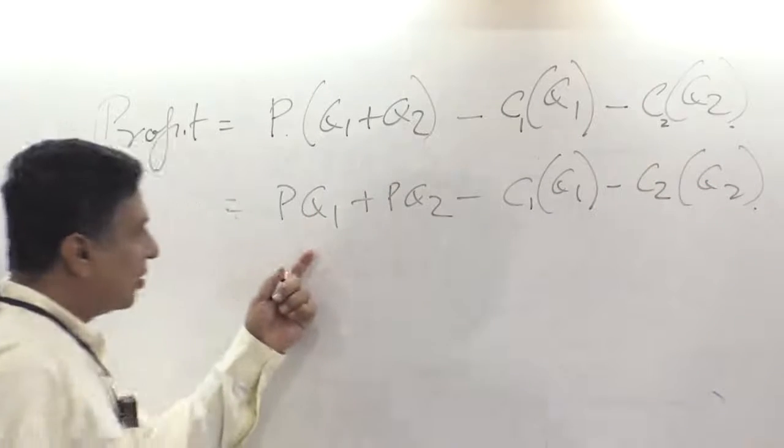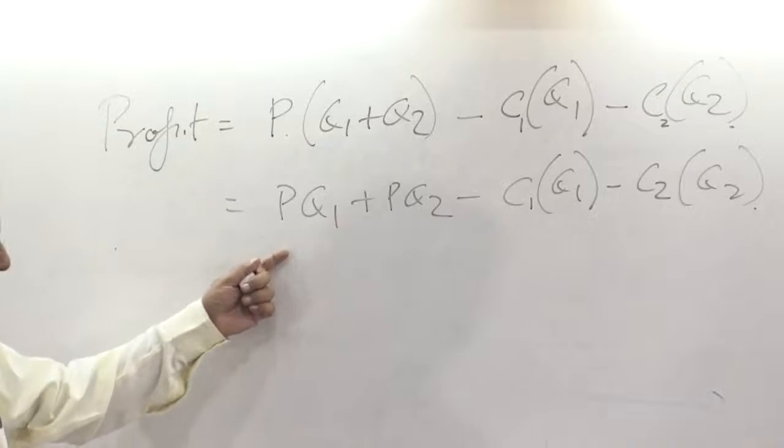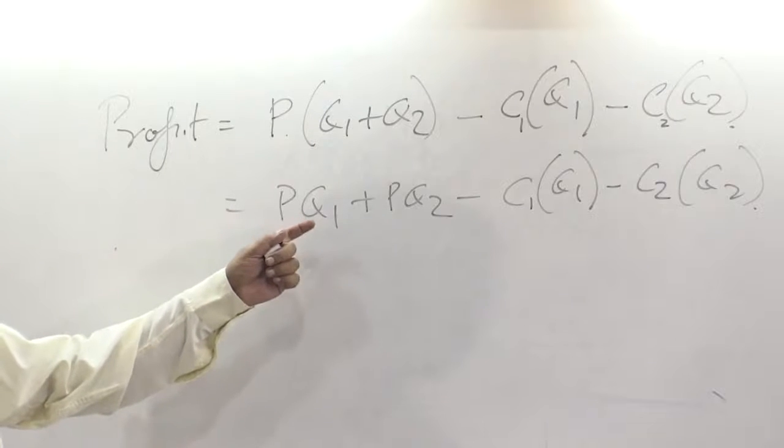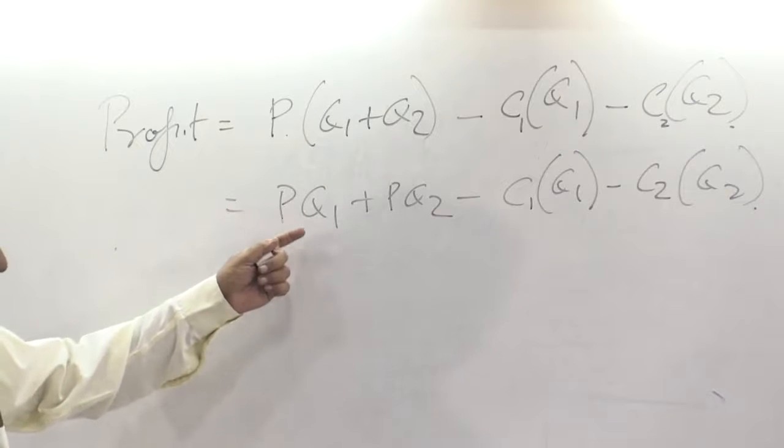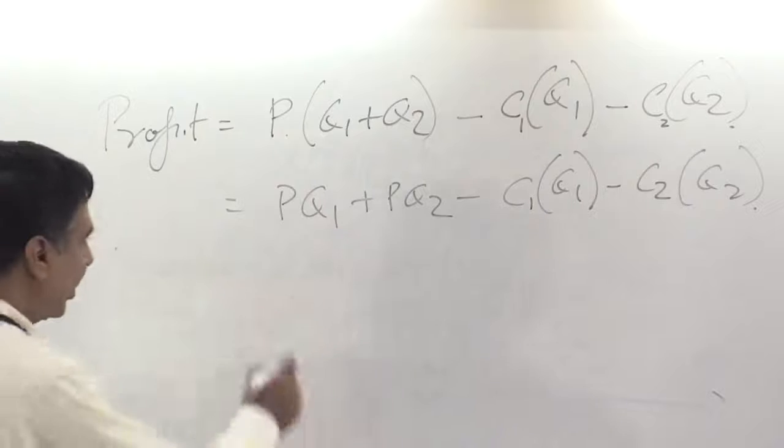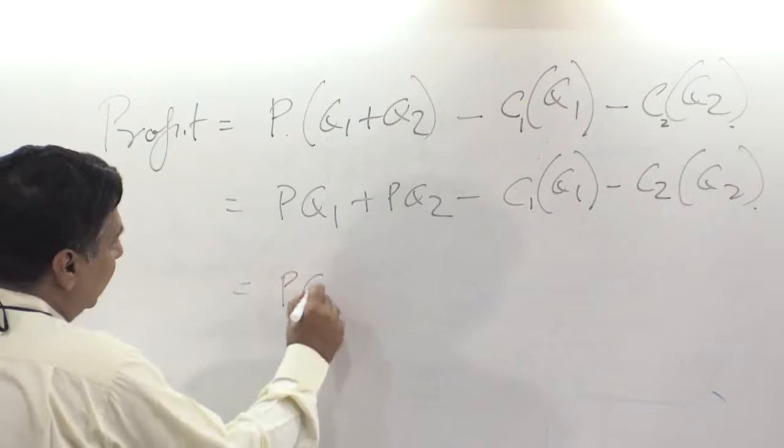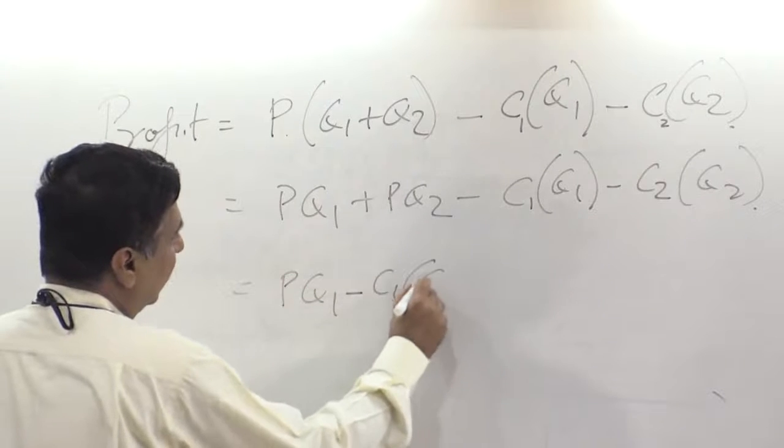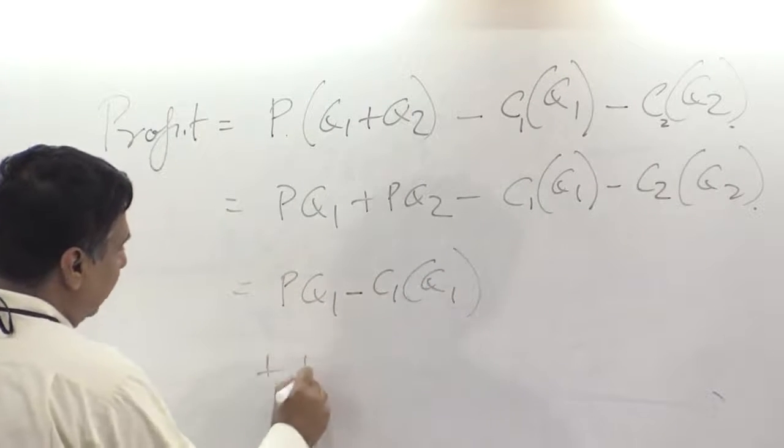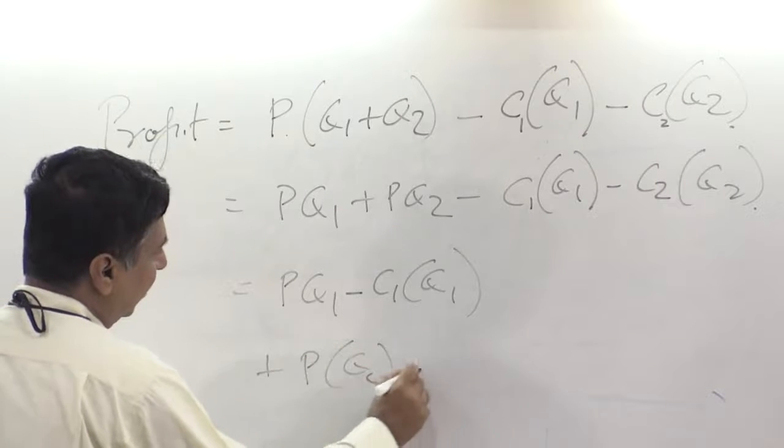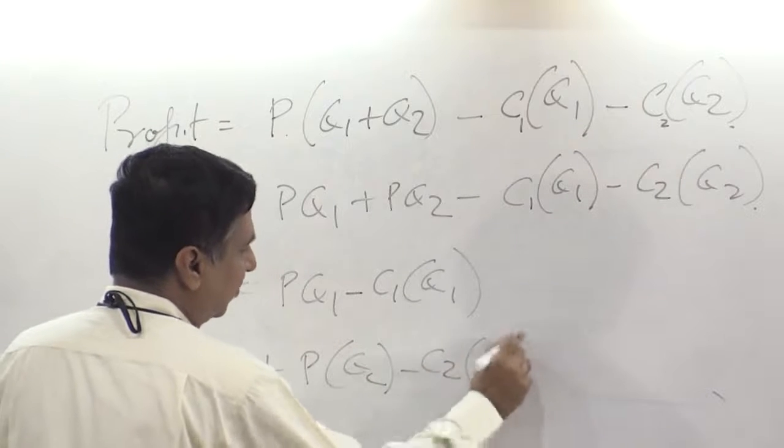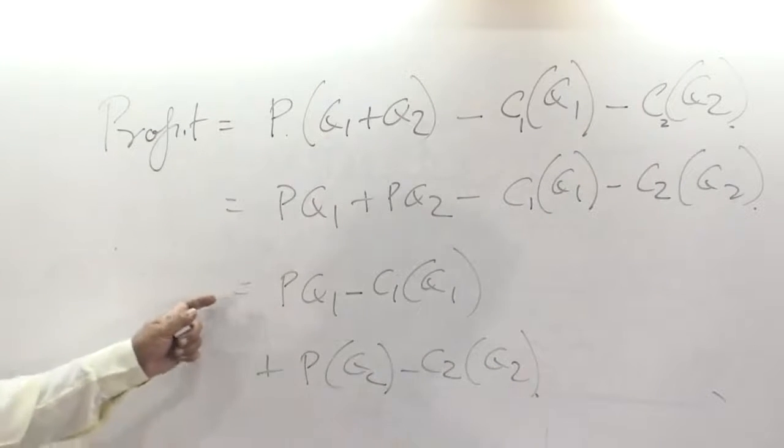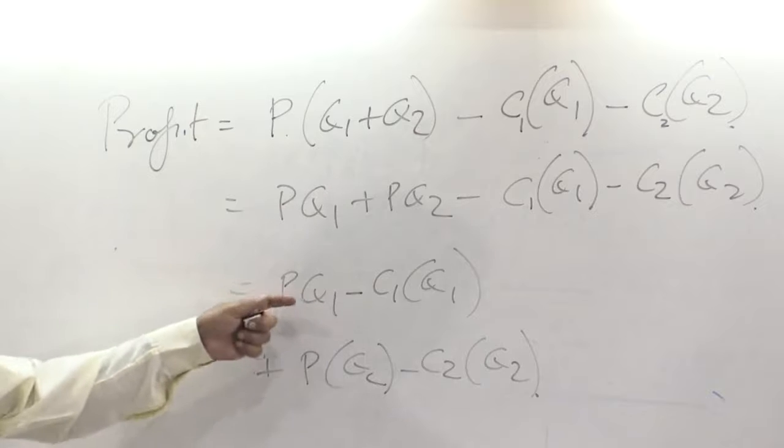Suppose you are trying to maximize this. So first you are saying I am going to do this maximization. I can write this as P times Q1 minus C1 of Q1 plus P times Q2 minus C2 of Q2. And then when I do the maximization, I will first take the derivative with respect to Q1.